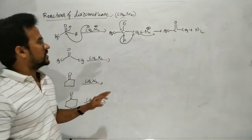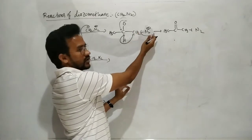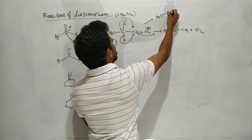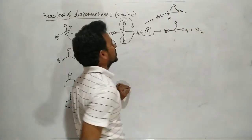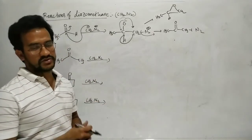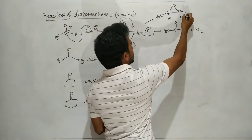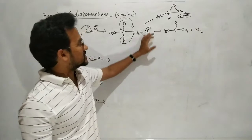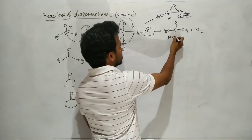One more reaction is also possible: after N2 leaves, the electrophilic carbocation can be attacked by the O⁻ instead of undergoing hydride shift. As a result, a cyclic ether (epoxide — three-membered ring containing oxygen) is formed. However, the three-membered ring is unstable, so this cyclic ether is only a minor side product. The ring-expanded carbonyl compound is the major product.